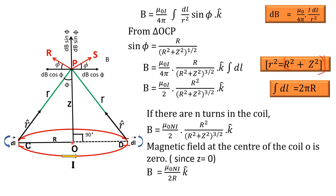If we find the magnitude at the center of the coil, at the center z equals 0. Substituting z = 0: R squared raised to the power 3/2 gives R cubed in the denominator. R squared divided by R cubed gives R alone. So the value of B at the center equals mu₀ nI divided by 2R, along unit vector k̂. That is, the direction of B will be along the z-axis. Thank you.